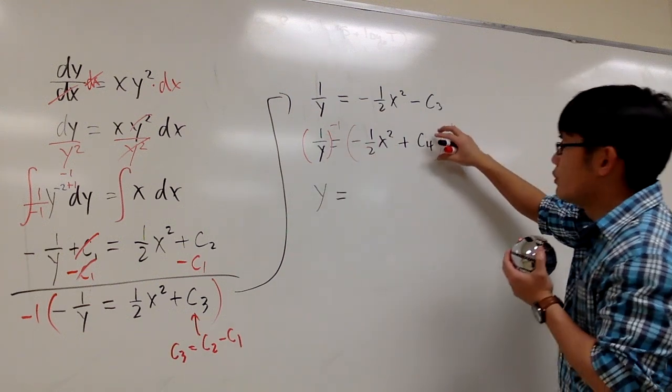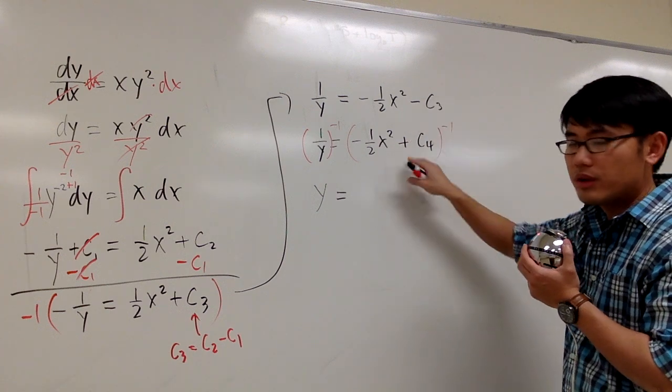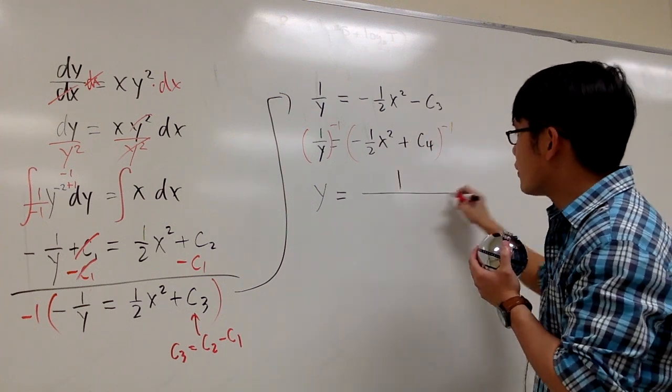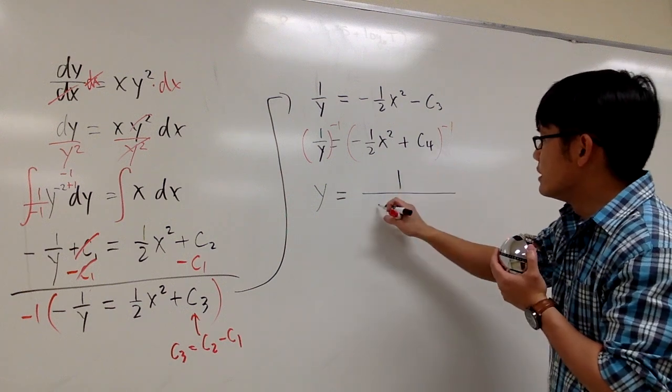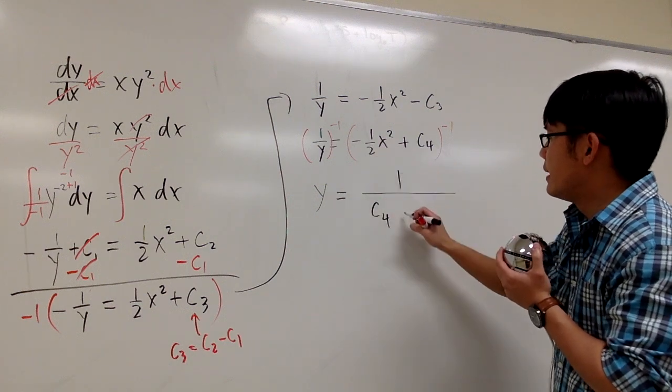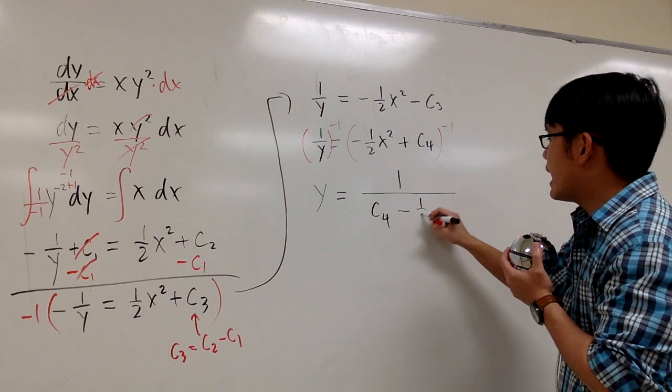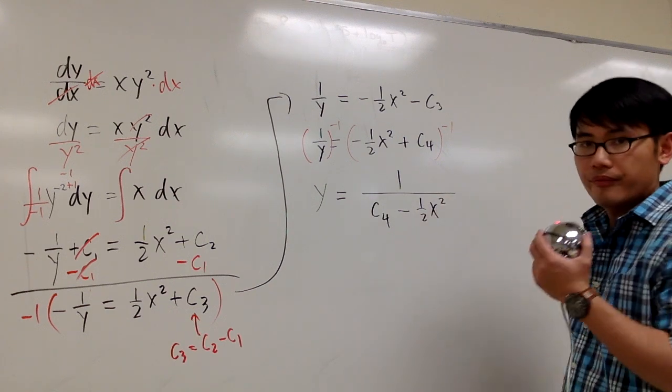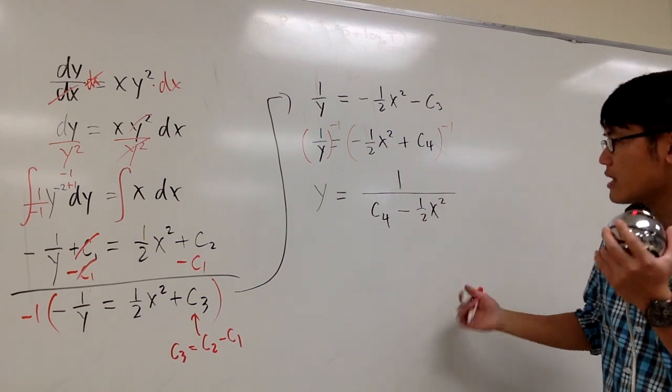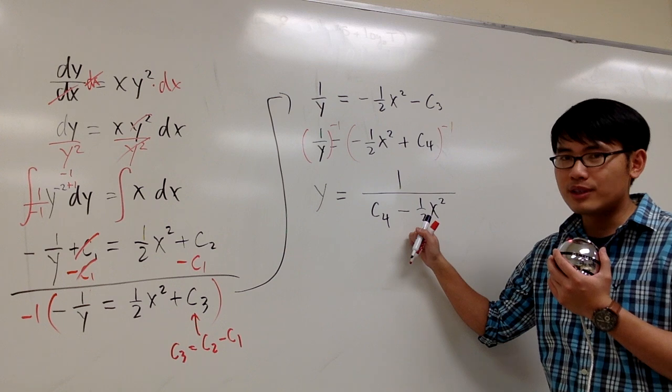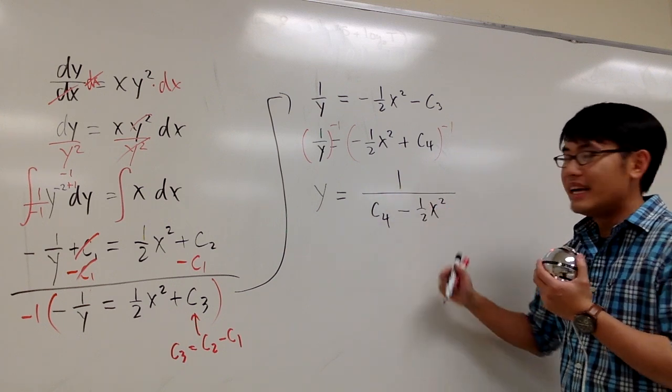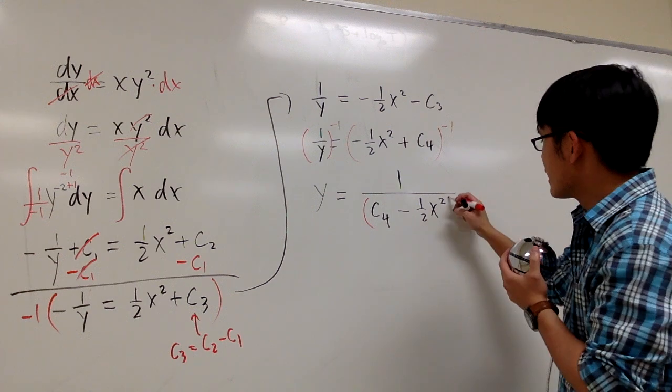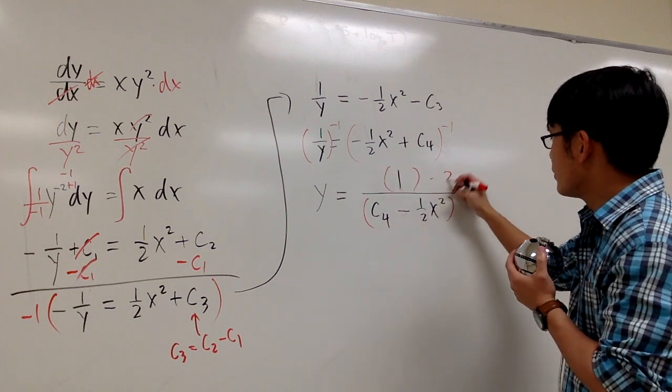And then I'll pretty much put this as 1 over. This becomes 1 over this thing. And let me write c4 first. c4 and then minus 1 half x squared. And we are pretty much done. But then this is a complex fraction because we have a big fraction, but then here is a small fraction. So let's multiply the top and bottom by 2.